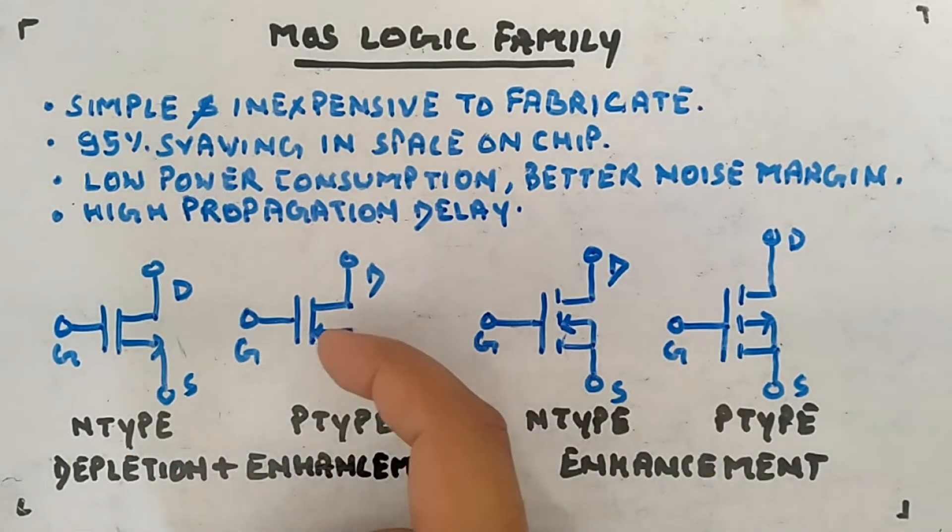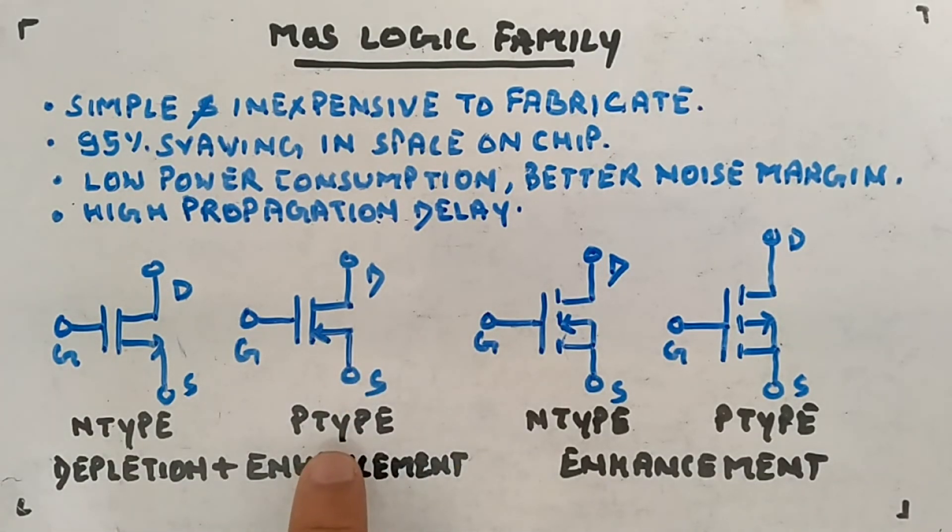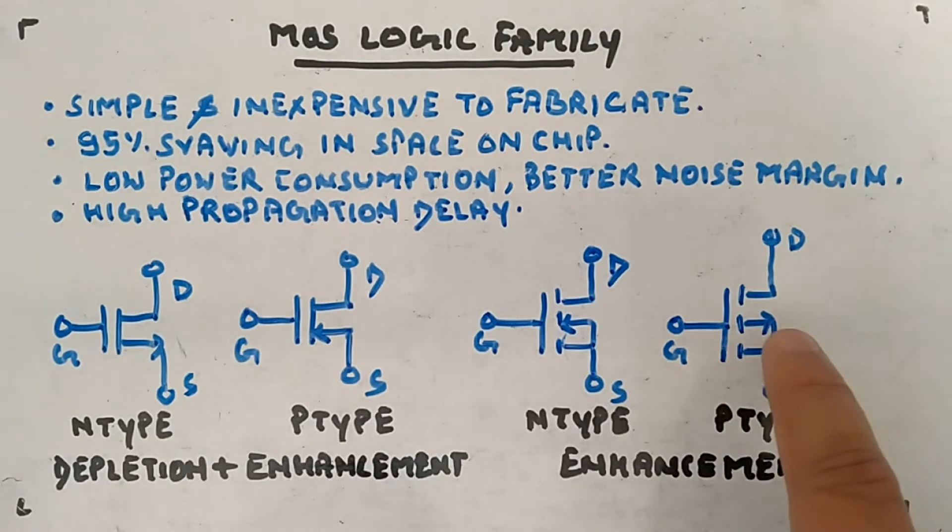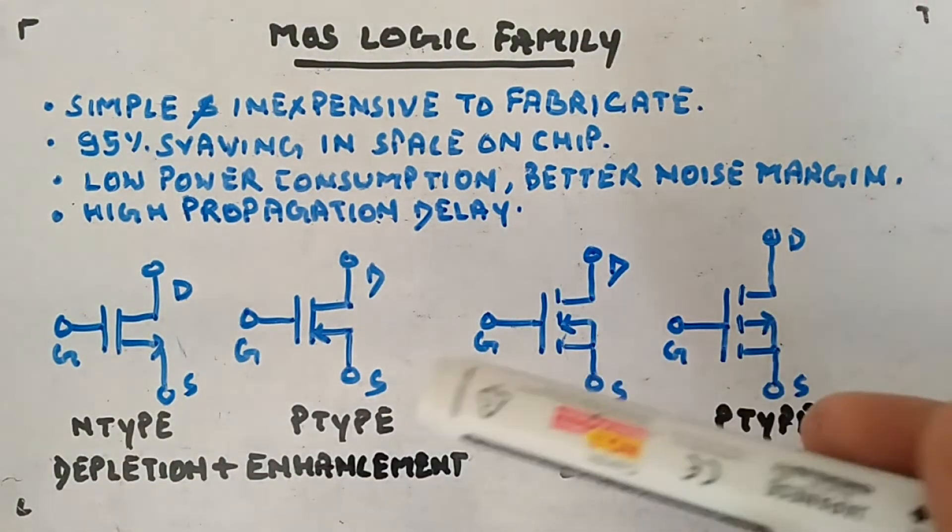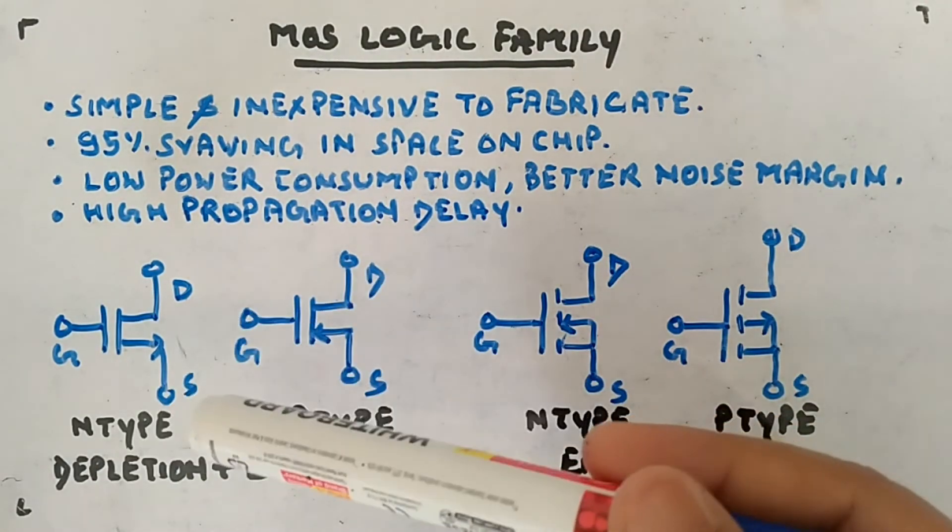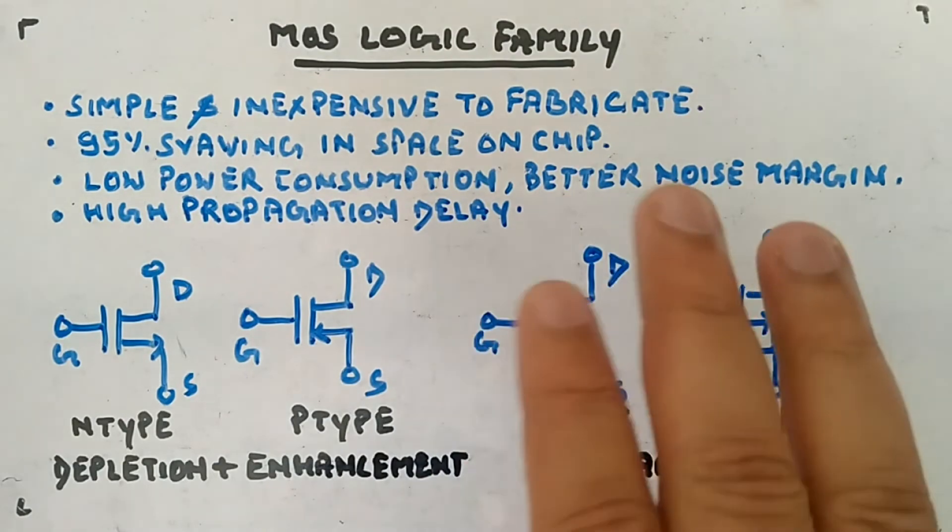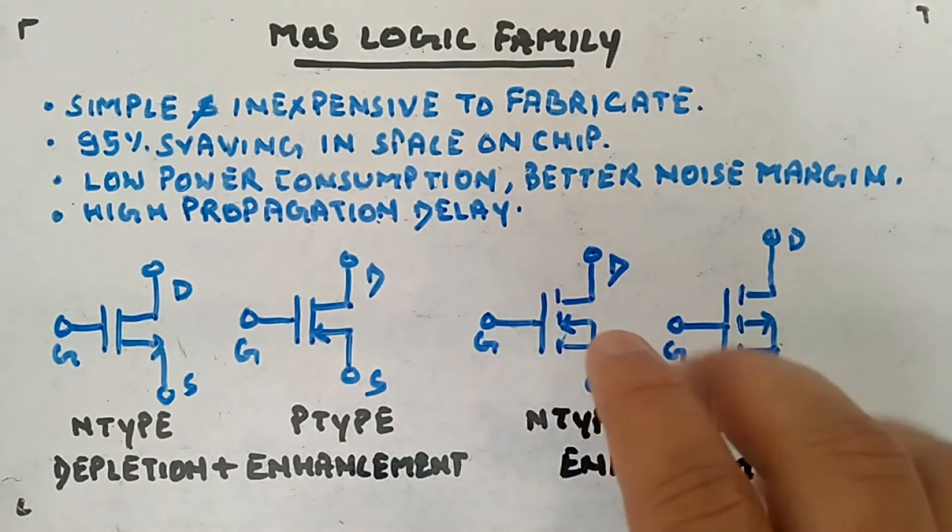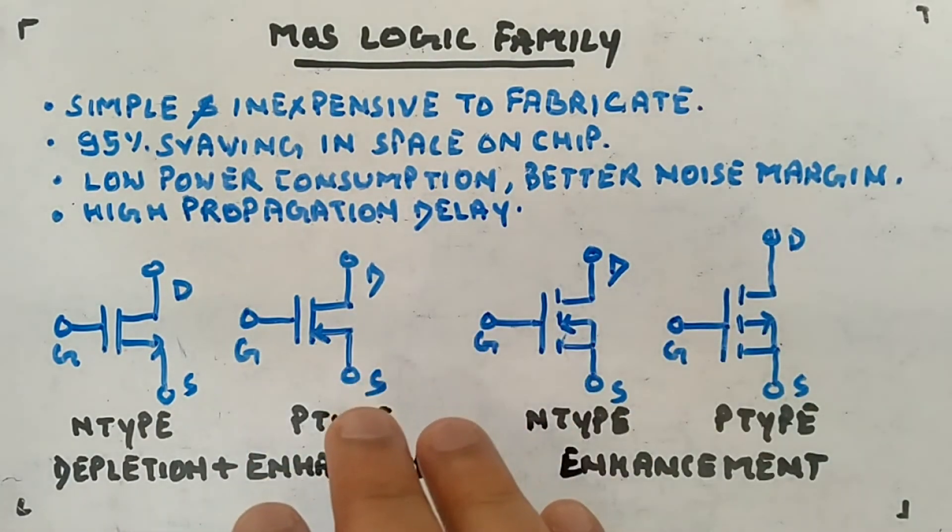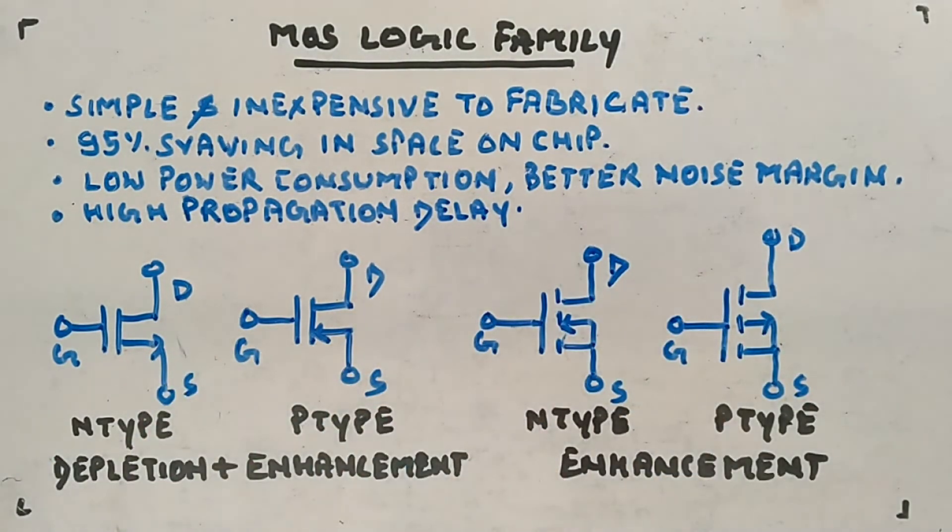Similarly in PMOS, you can see the arrow is going inside for depletion plus enhancement type P-type. But for enhancement type PMOS, the arrow is going out. So these arrows you have to take care of. I'll be using any of them, mostly these. So just be conscious in the back of your head what kind of MOSFET is given - enhancement type, depletion type, N-type, or P-type, especially about these arrows.